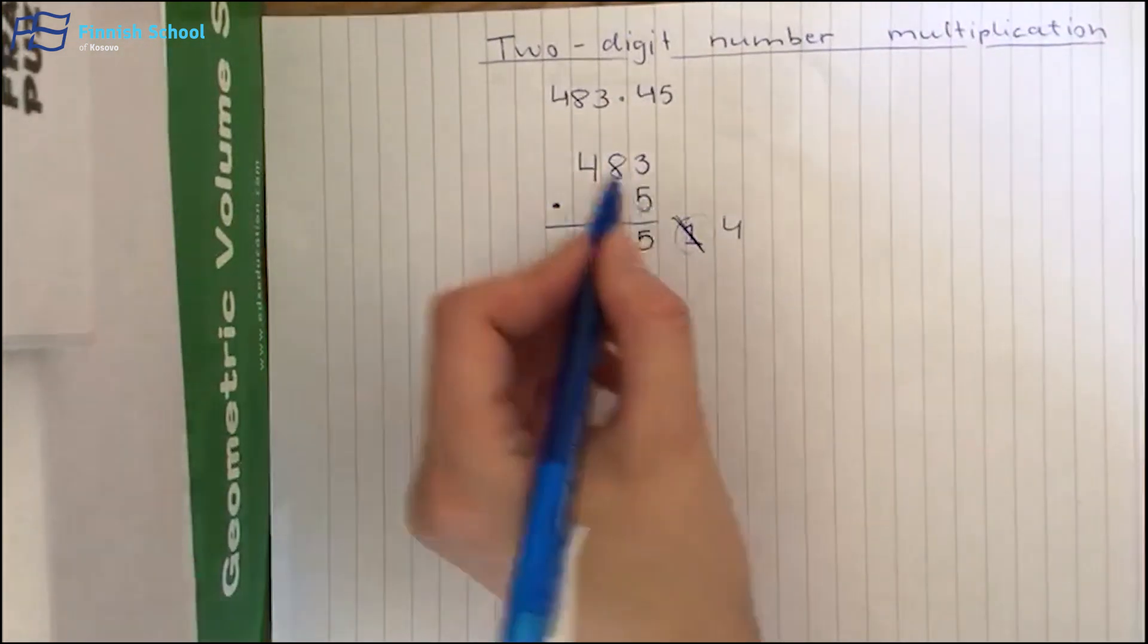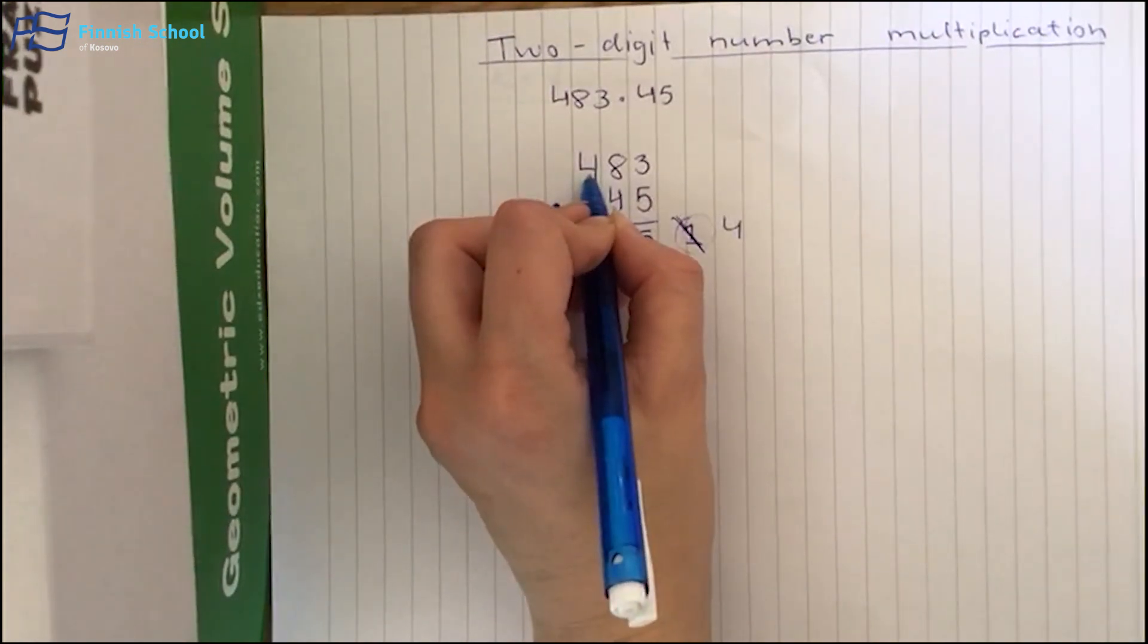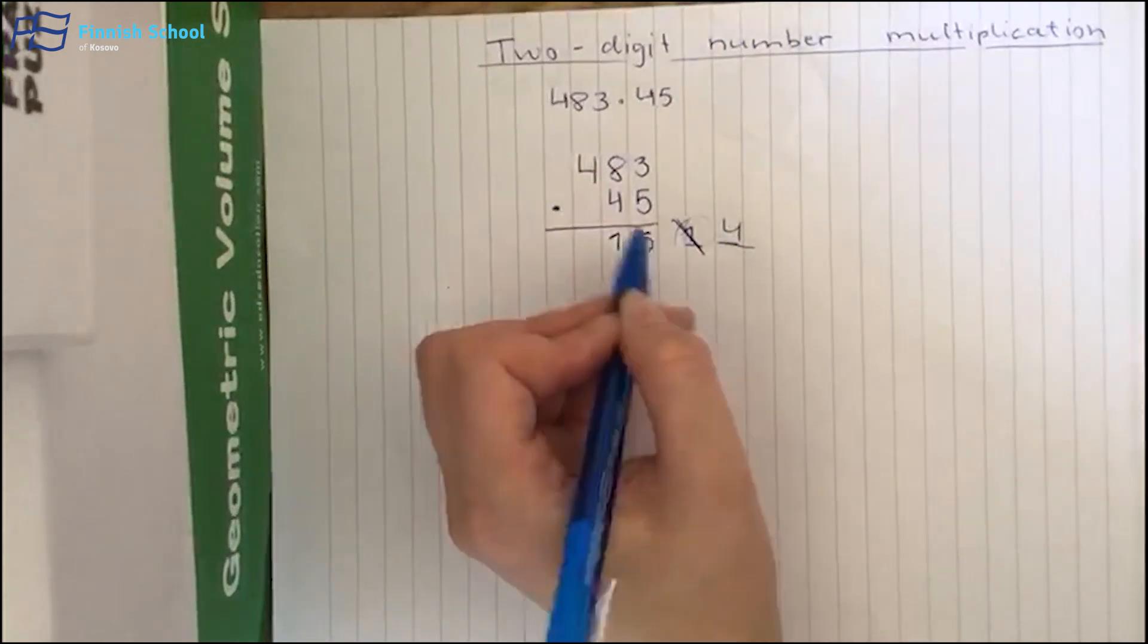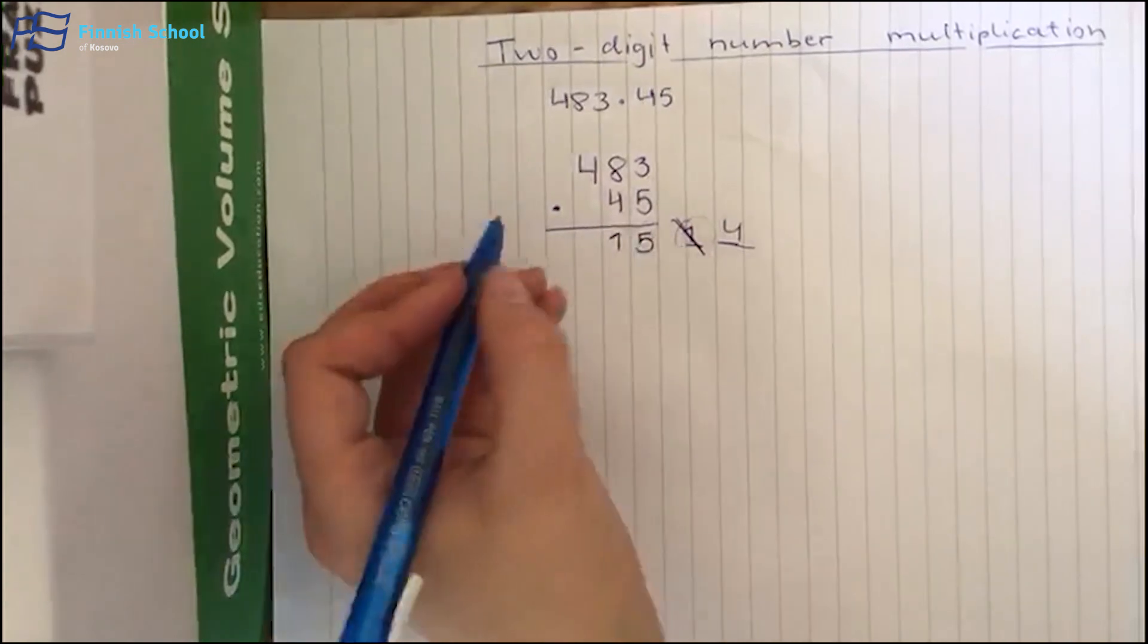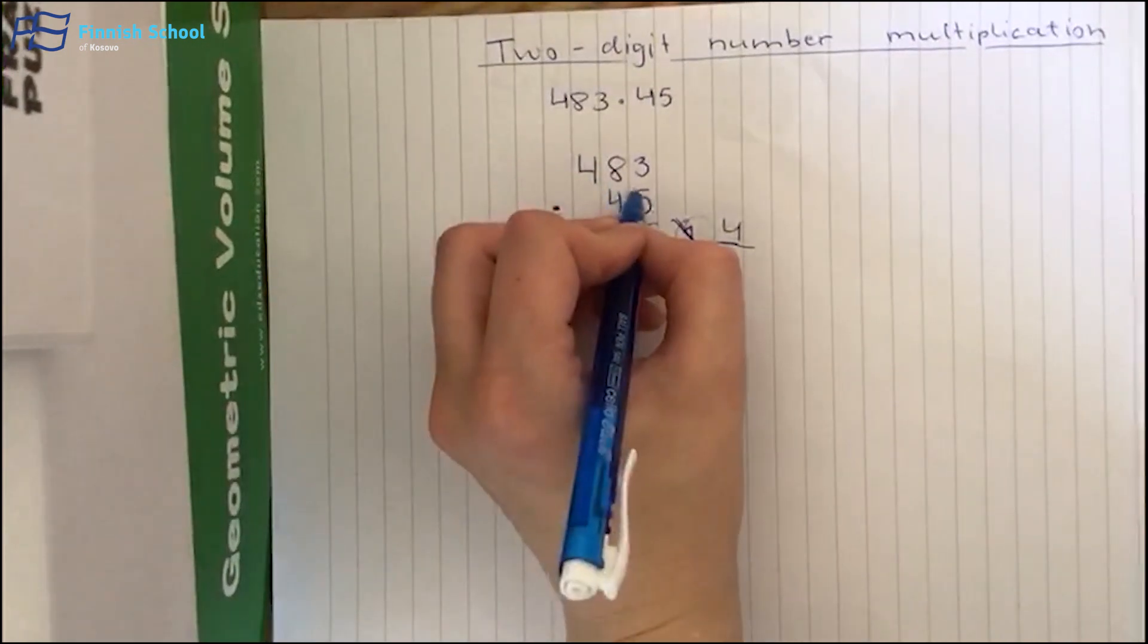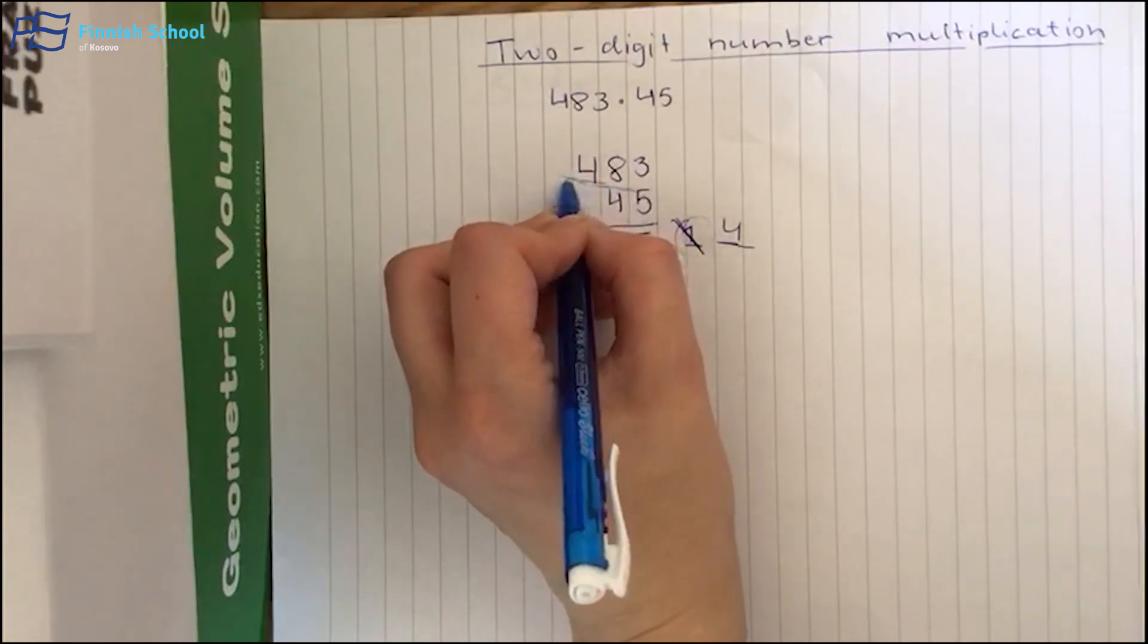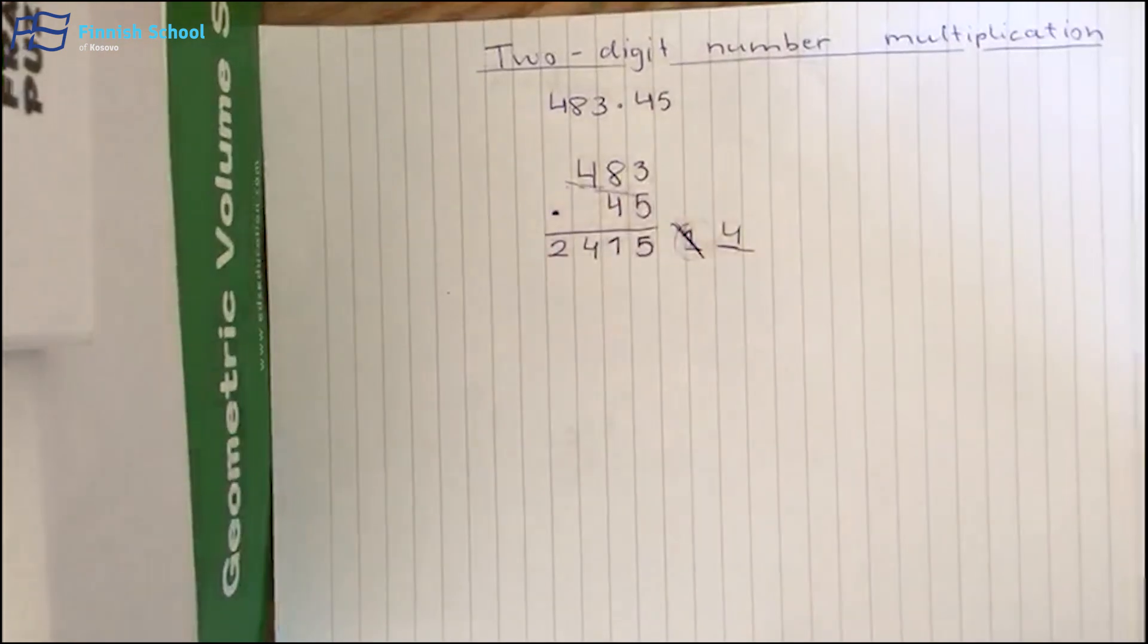Okay, now 5 times 4, it's 20. But now we have a number 4 here. We have to remember to take it with us. So 24. And now, because there's no more numbers that number 5 could multiply, we put 24 here.